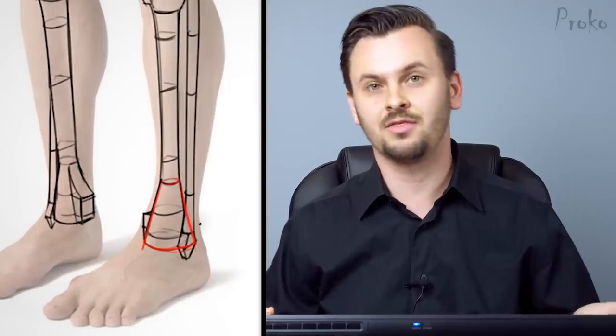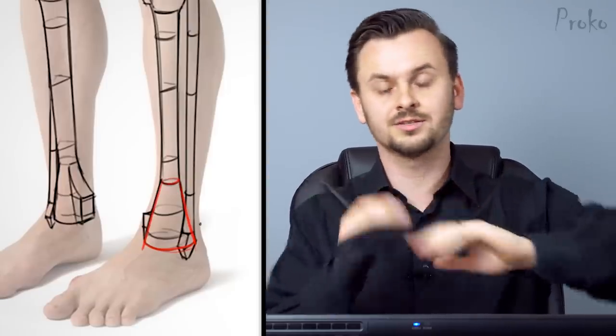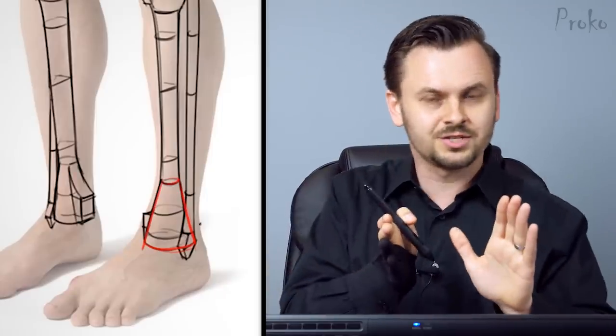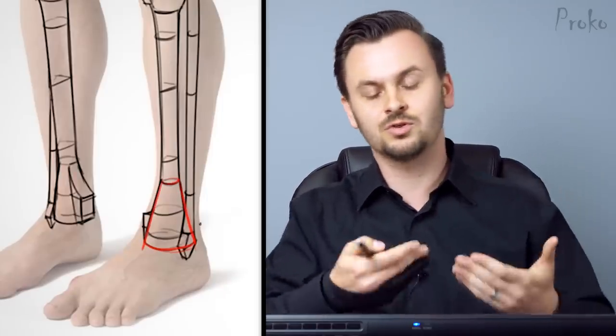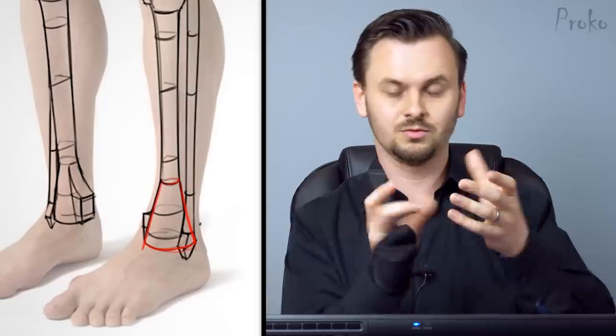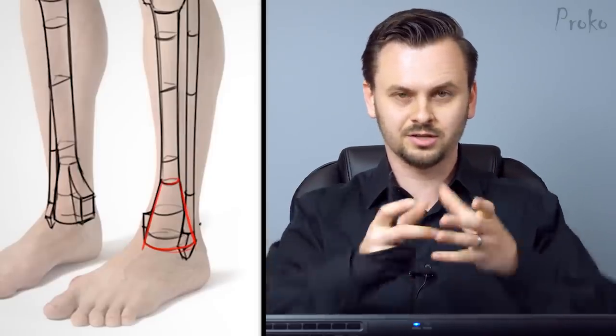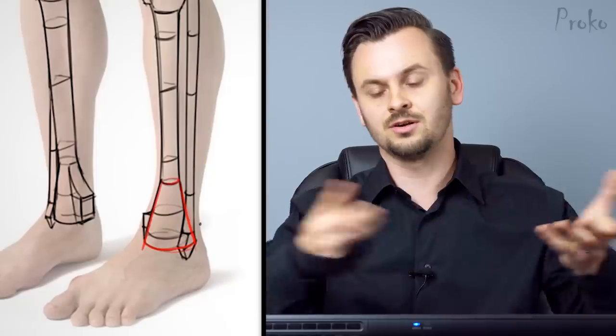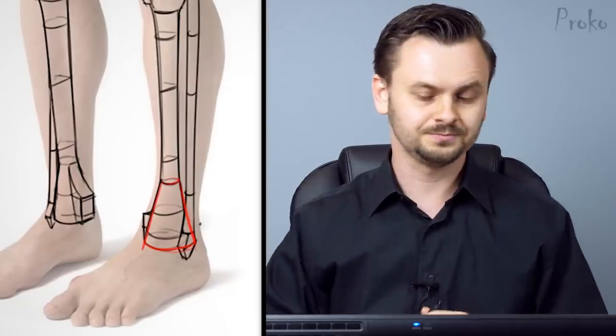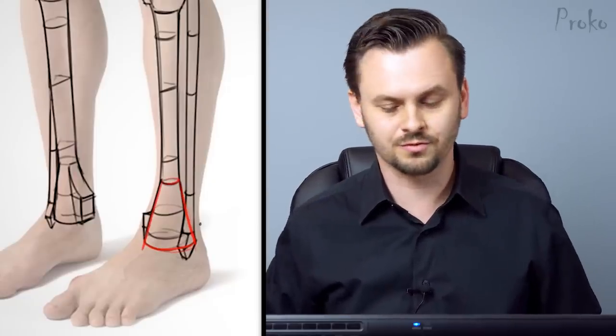Boxes are much better at that because you can see the different planes. So you can see if something's facing a little bit away from you or towards you. With a cylinder you can't. You rotate a cylinder and it's the same. It doesn't show you which way it's facing. Only the tilt of the cylinder shows you its direction. So boxes are much more useful for that.